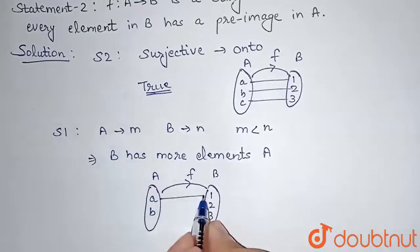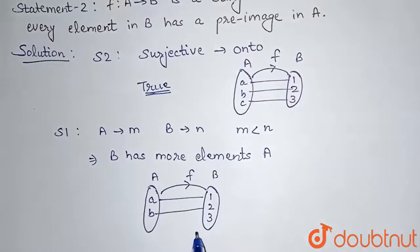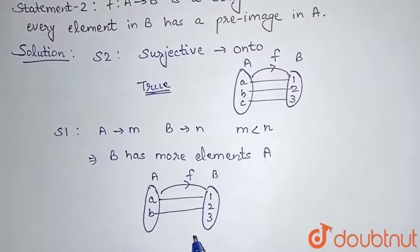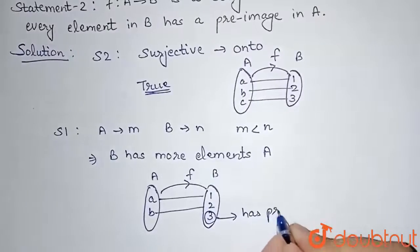Now let's say this A is related to 1 and B is related to 2. And now we need to find the number of onto functions. So as we can see here, this element 3 has no pre-image in the set A.